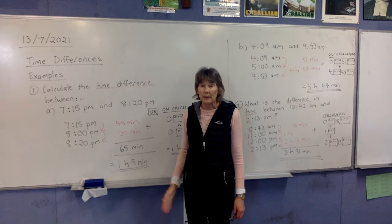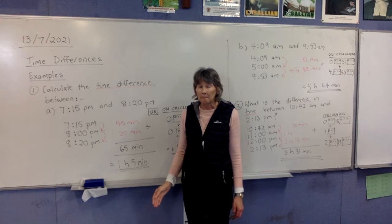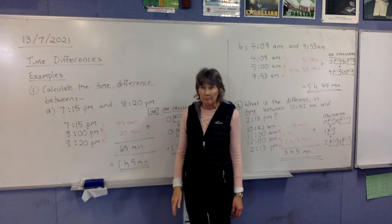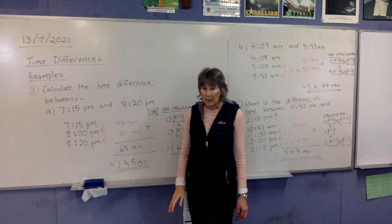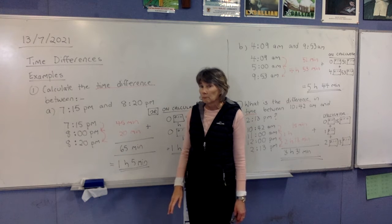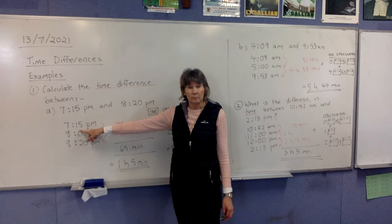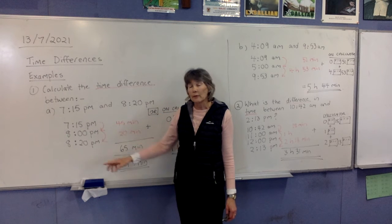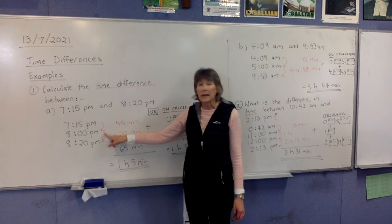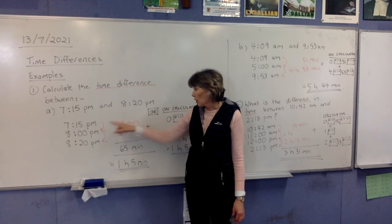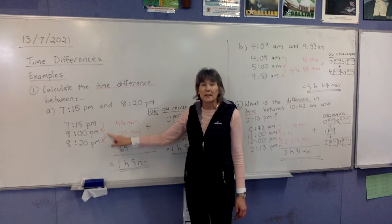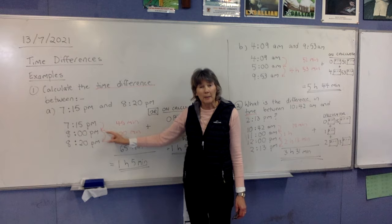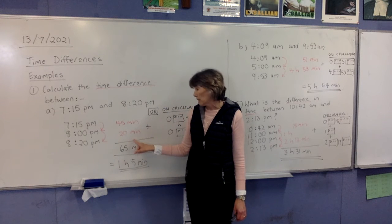From 7.15pm to 8pm — how much time has there been? There are 60 minutes in an hour, and 15 of the minutes have already gone, so we've got 45 minutes until we hit 8 o'clock. Our time difference here is 45 minutes. Then from 8pm to 8.20pm — this bit's easy. The time difference between 8pm and 8.20pm is 20 minutes.